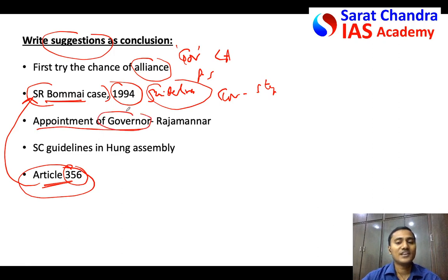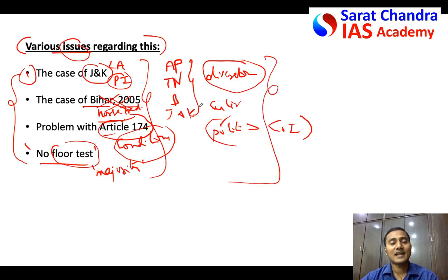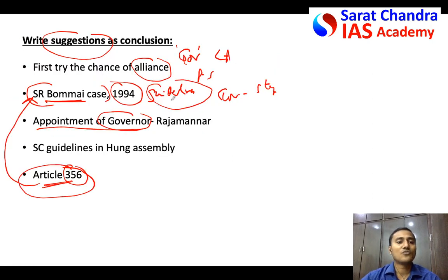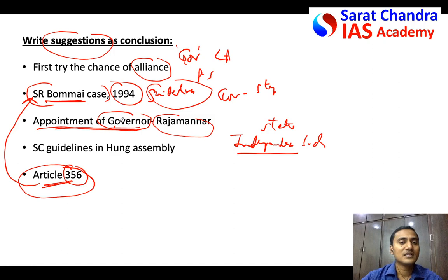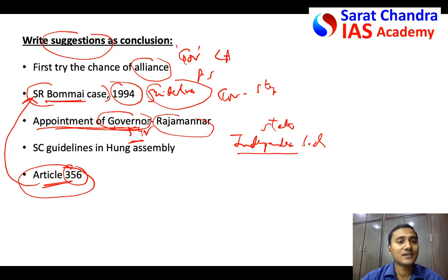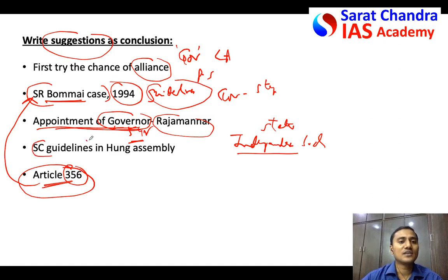We also have to mention the appointment of Governor. Most of these problems occur because the Governor is acting on behalf of the central government. The appointment of Governor should be made by an independent body. In fact, the Rajamana Commission said that appointment of Governor shall be made by a body in which the state government is also a member. Also, the Governor should have a fixed tenure of five years so that he need not fear the center's directions and can act purely based on the Constitution. Better to appoint a constitutional expert as Governor rather than someone from a political party.